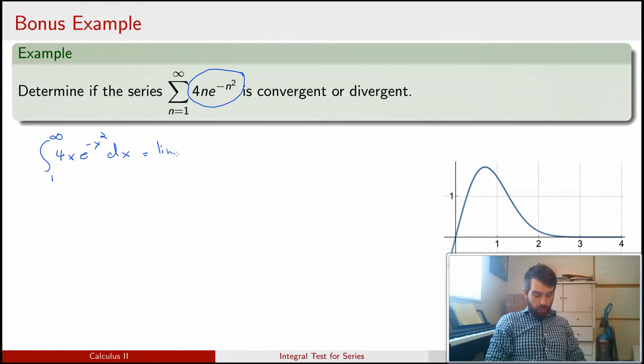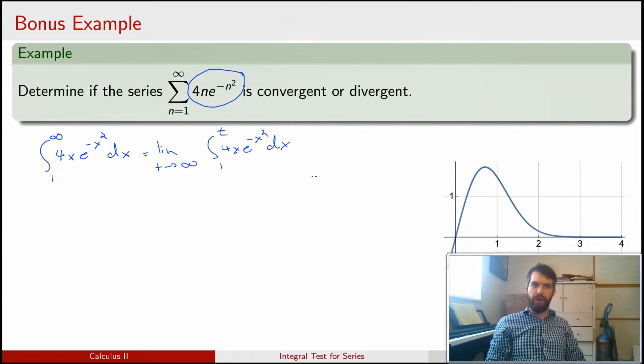Well, I'd first note that this is the same thing as the limit as t goes to infinity of the integral from 1 up to t of 4x e to the minus x squared dx. That's how I deal with improper integrals. I write this as sort of this limit of these, quote unquote, partial integrals. They're sort of analogous to partial sums in series.